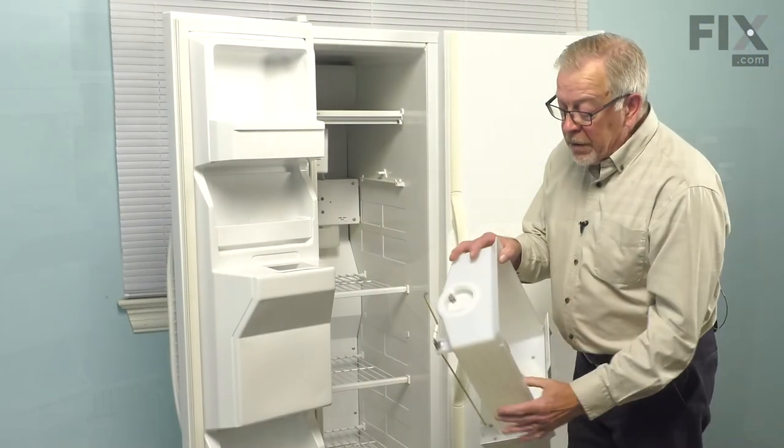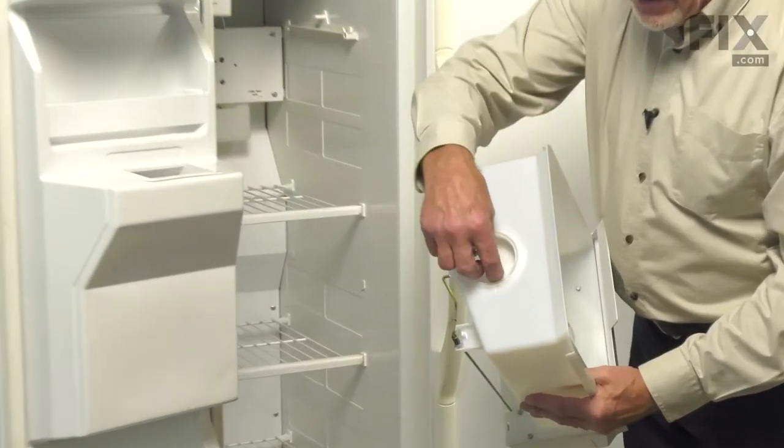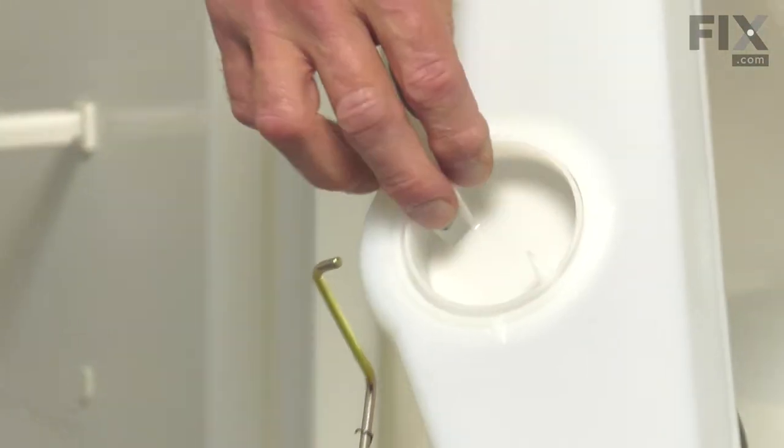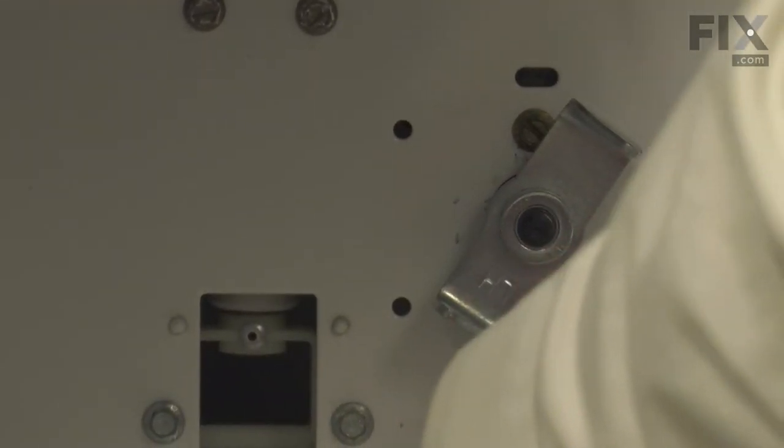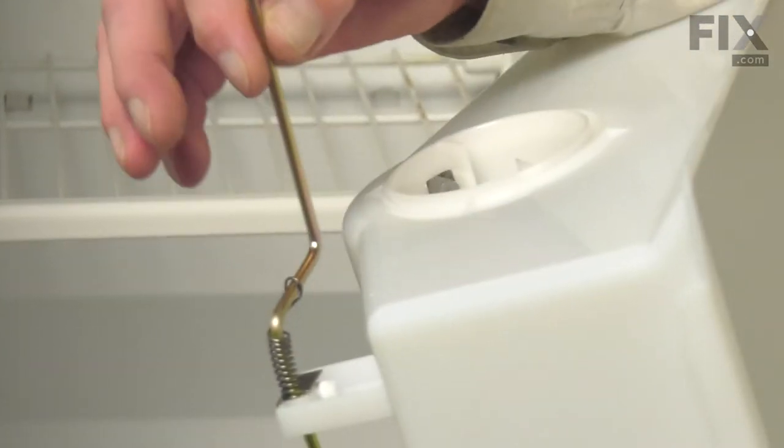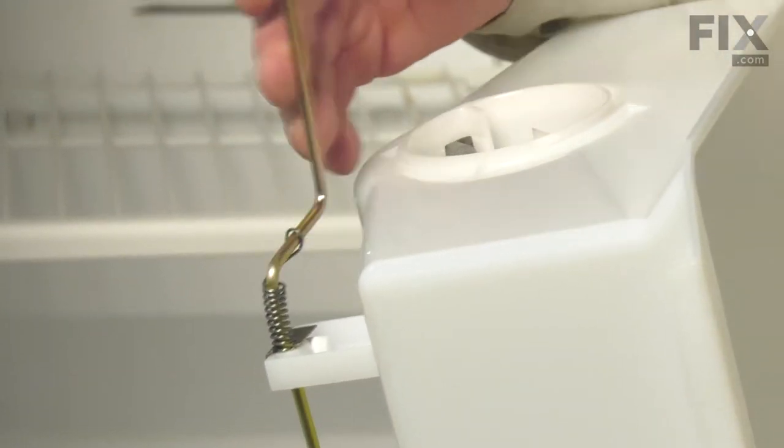When installing the new one, we first want to look at the back of it to make sure that we rotate that auger into position that will line up with the drive gear at the back. As well, we'll want to make sure that the lever for the crusher door fits into the opening where the solenoid is at the back as well.